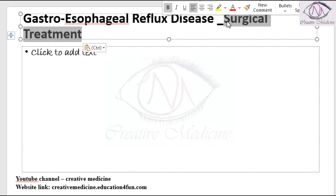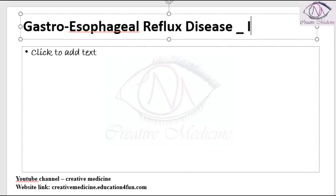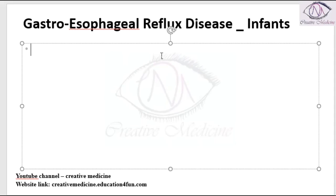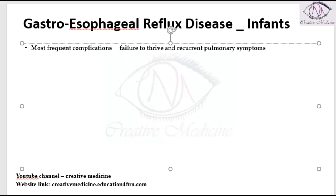Now what is important in infants? We will see some important points about gastroesophageal reflex disease in infants. In the gastroesophageal reflex disease, the most common complication of GERD in infants is failure to thrive, and recurrent pulmonary symptoms are more common complications in infants, i.e. children less than 1 year of age.